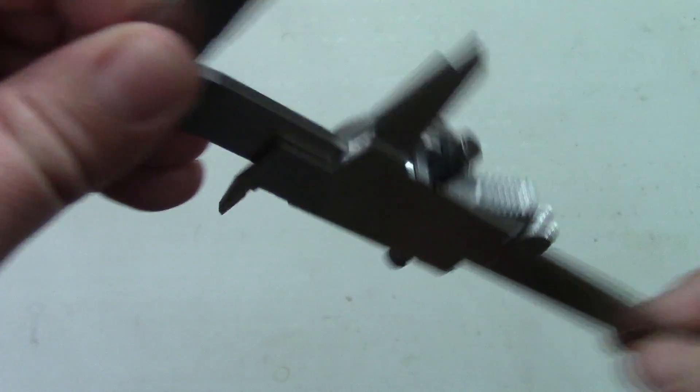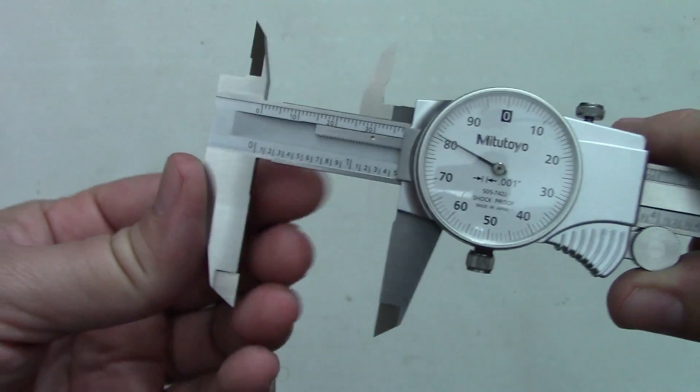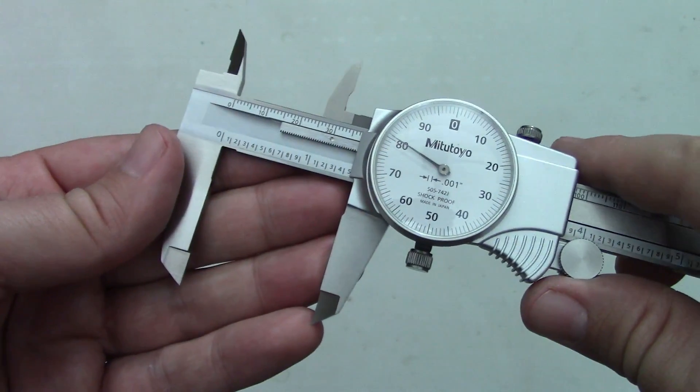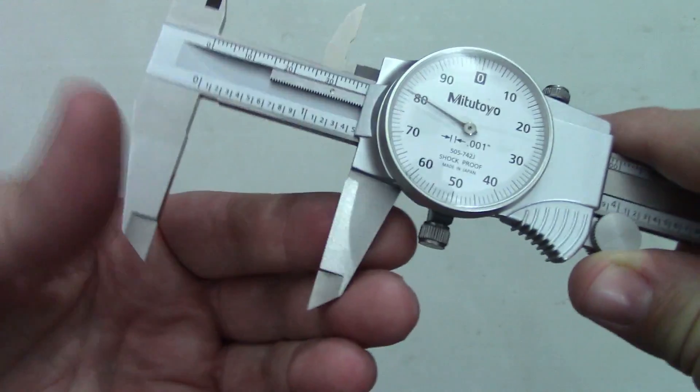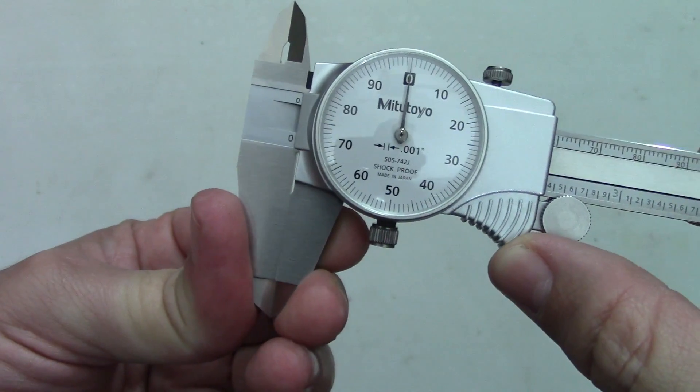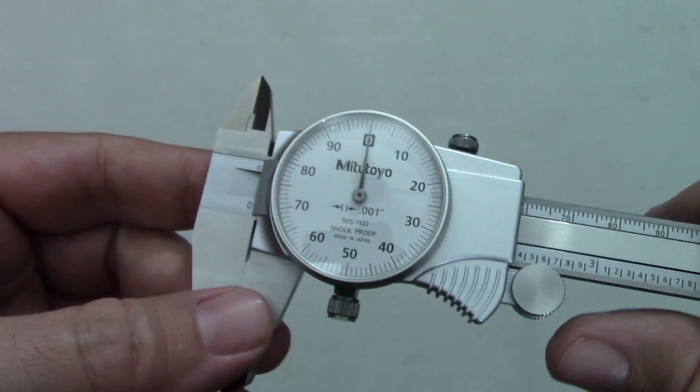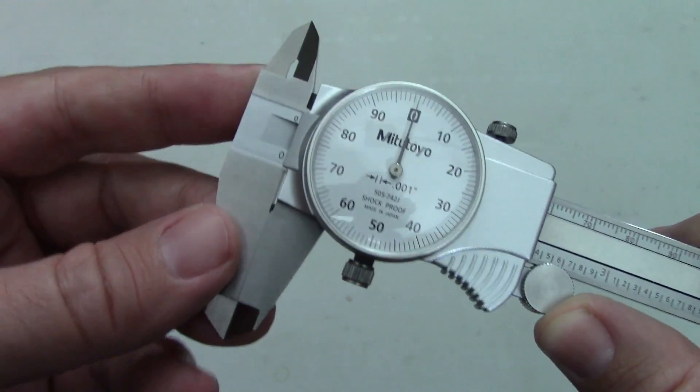The very first thing you should check is whether the jaws are clean. It's pretty common to get a small chip stuck to the jaws, especially when handling oily parts. This is easily solved by wiping them off and closing the jaws again to check if that was the issue. I'm in the habit of wiping off the jaws every time I pick up any of my calipers, no matter which type I'm using, dial, digital, or vernier.